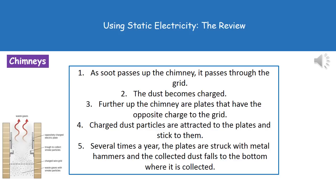Inside the chimney there's a charged wire grid. As the soot passes up the chimney it crosses that grid, and as it does so it becomes charged. So the little particles of dust and soot now have a charge on them. A bit further up the chimney there are oppositely charged electric plates.